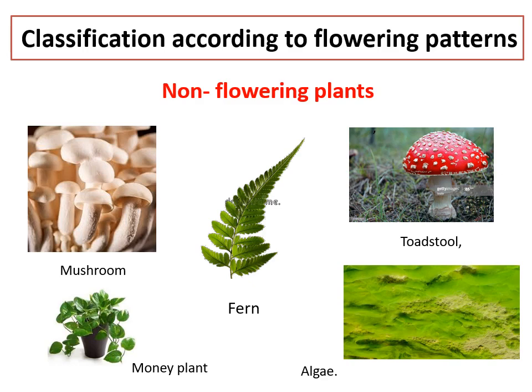If you look at the lower side of the mushroom, you can find some black spores. These black color dots are also present at the back side of the mature leaves of the fern. They reproduce with the help of these spores. Money plant can grow from a cutting of any portion of its branch. The last green color picture is algae, which grows in water and multiplies by binary fission. So that is the vegetative type of reproduction seen in money plant and algae.